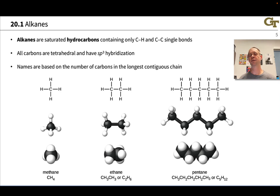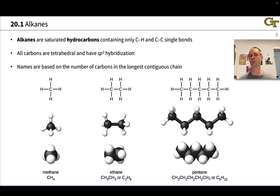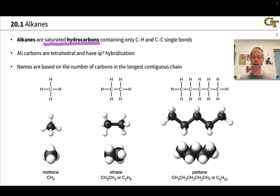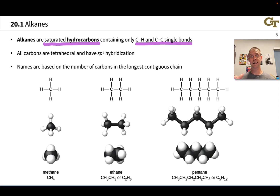Let's jump right in and begin talking about classes of organic compounds. When I hear the words organic chemistry, the first prototypical set of organic compounds I think of are the alkanes. The alkanes are hydrocarbons containing only carbon and hydrogen that are saturated — meaning they have the largest number of hydrogens possible given the number of carbons, because they contain only carbon-carbon and carbon-hydrogen single bonds. These carbon-carbon single bonds mean that each carbon has four bonds total, giving each carbon tetrahedral geometry and sp3 hybridization.